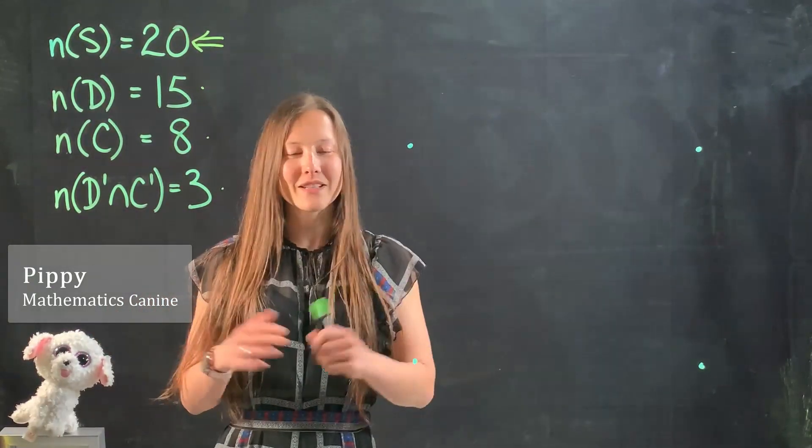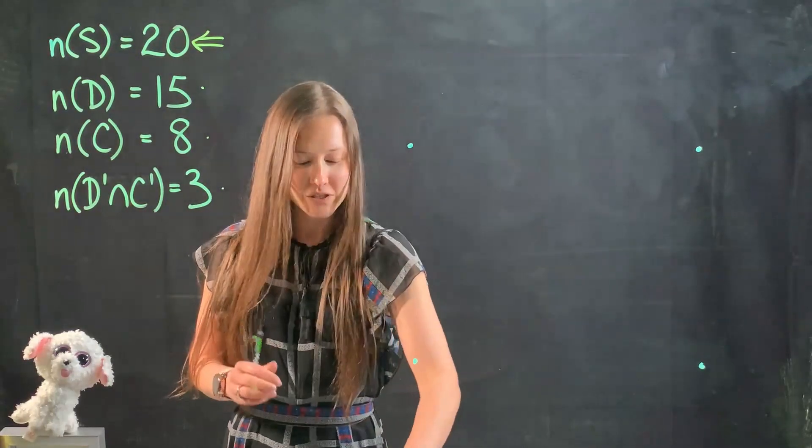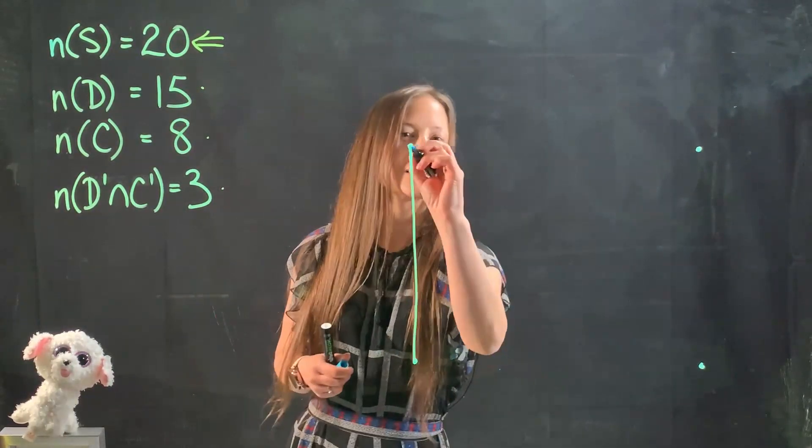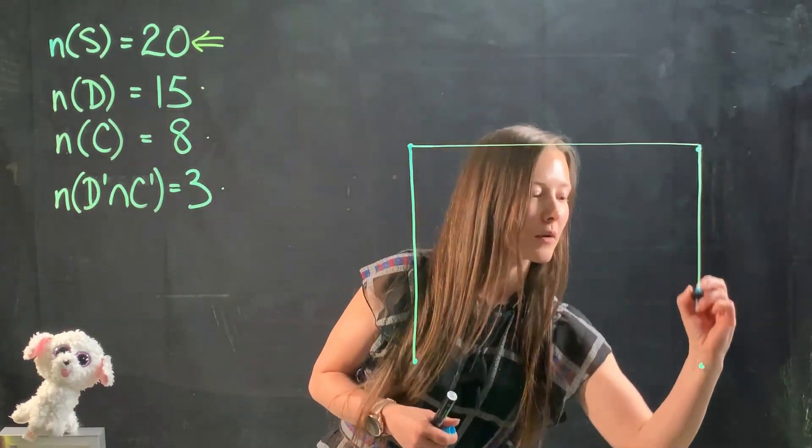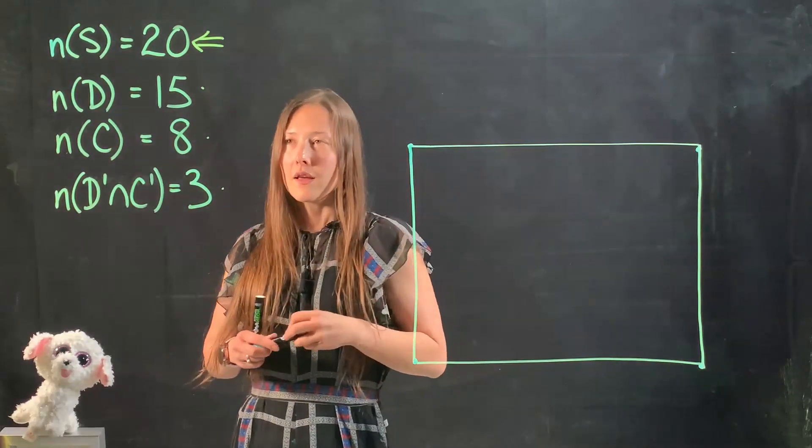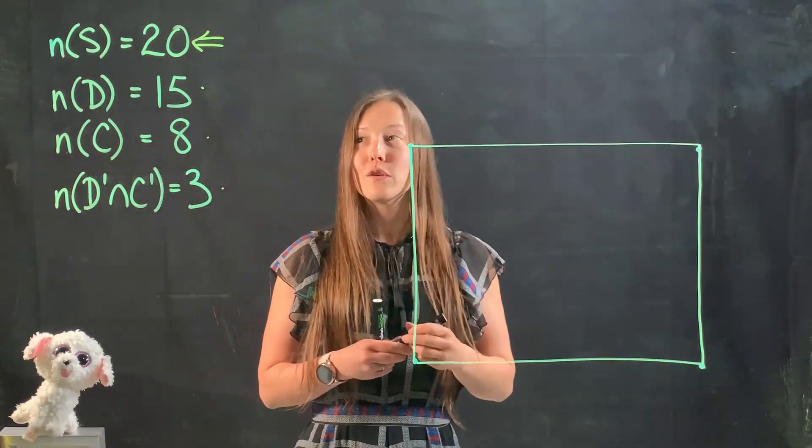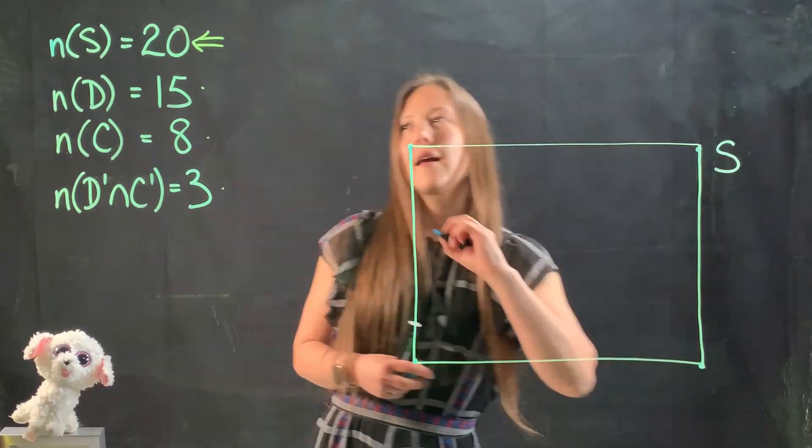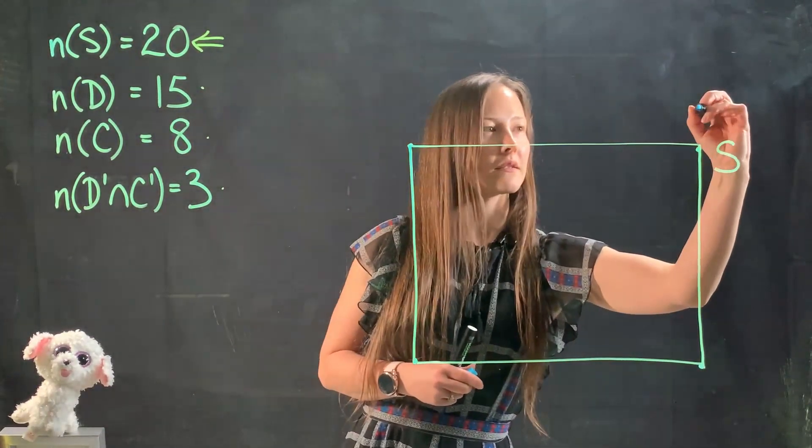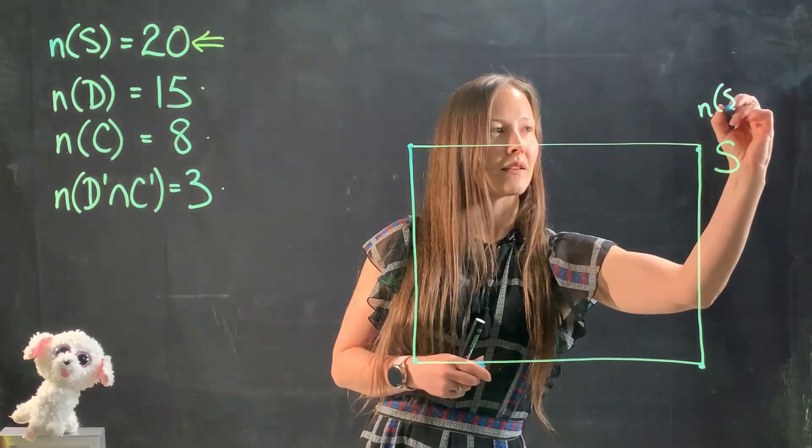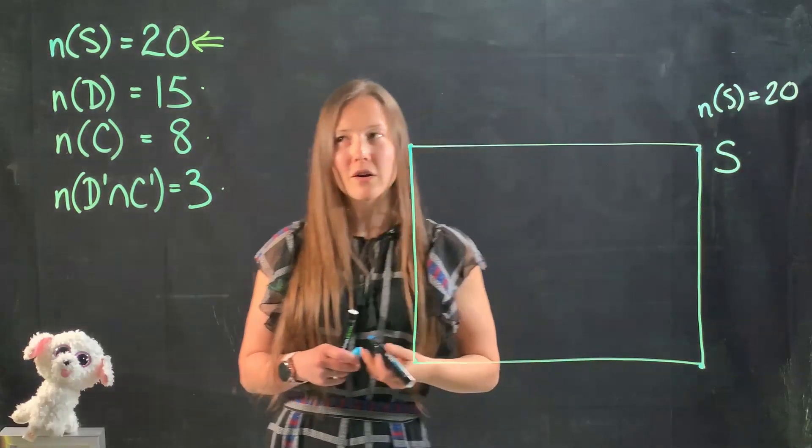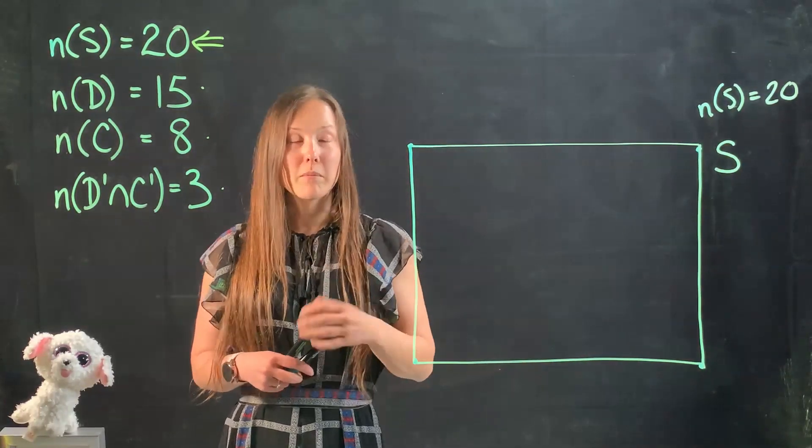Today Pippi's gonna help me out a bit. Hopefully doesn't fall over. What we're gonna do is make a little box to house our data. In the corner we're gonna indicate the universal set S, and as I pointed out over here, the number of elements in our universal set is 20.